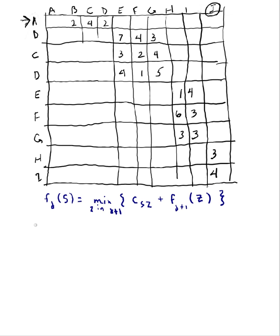The final stage is F5. The optimal cost to go from the only node S in the final stage, stage 5, is 0.